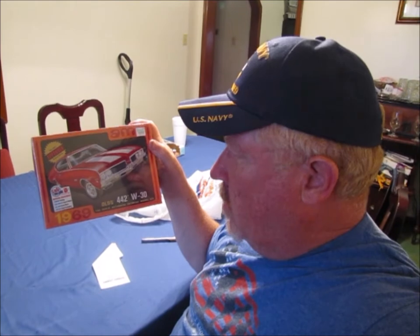AMT Oldsmobile 442 W30, 1969. Like I said, got it at Hobby Lobby and I used the 40% off coupon. Let's see. $19.52. Not too terrible. So, let's take a look and see what's inside the box, shall we?